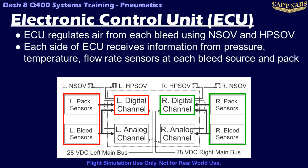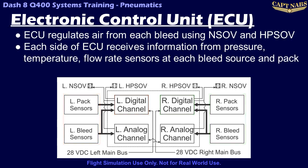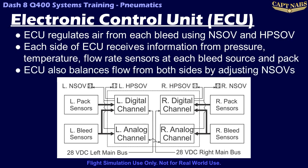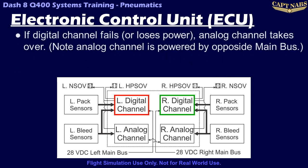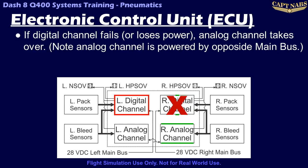The ECU can also fully close the nacelle shutoff valve to stop bleed air should a leak or temperature or pressure exceedance be detected. The ECUs also regulate the position of the nacelle shutoff valve to balance the bleed sources and ensure each engine is providing approximately 50% of the needed bleed air, assuming that both engines are running. Should a failure occur in a digital channel of the ECU, the analog channel on the same side can take over operation of the bleed system for the corresponding engine. Should a power loss occur to a DC main bus, the corresponding ECU digital channel will also stop working, but the analog channel can take over as it is powered by the opposite DC main bus.